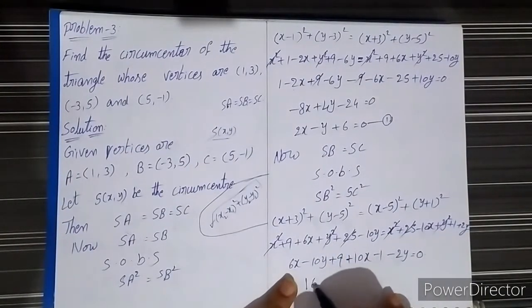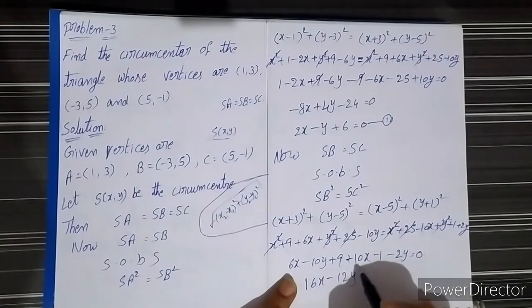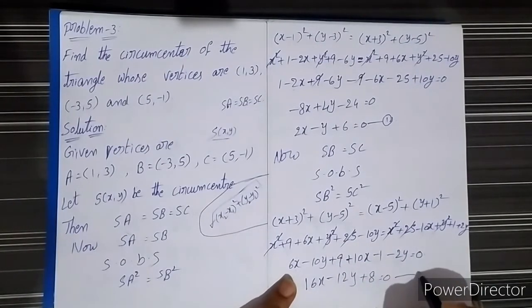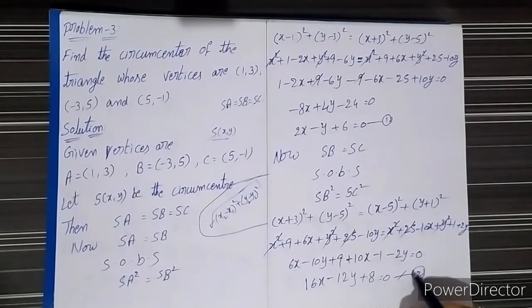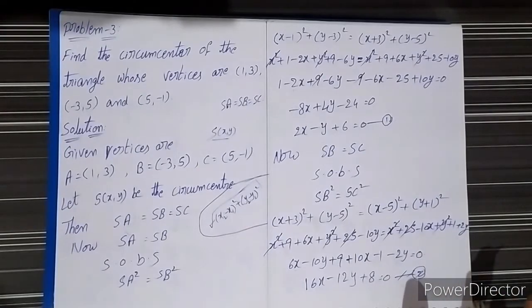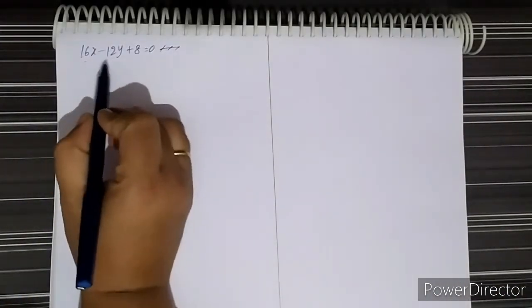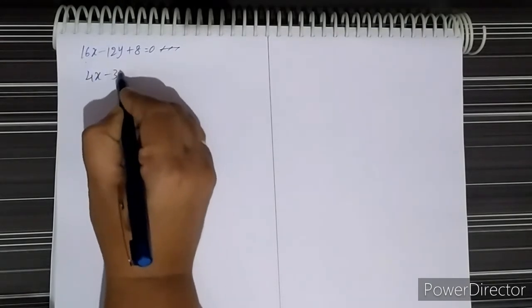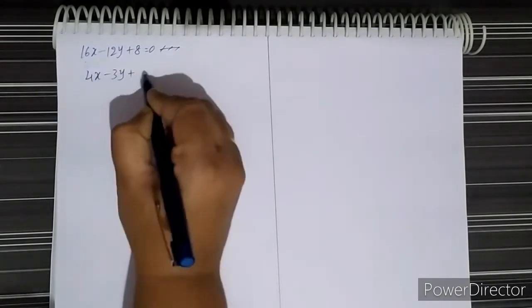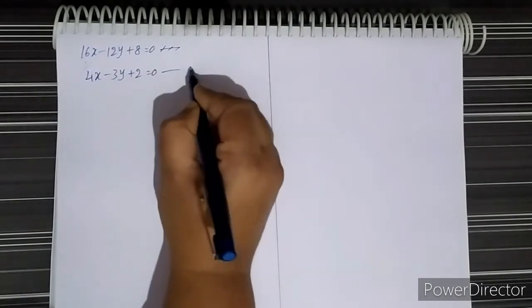This gives 16x - 12y + 8 = 0. This is Equation 2. Taking 4 as common: 4x - 3y + 2 = 0. This is Equation 2.